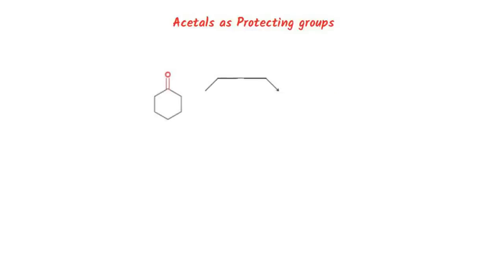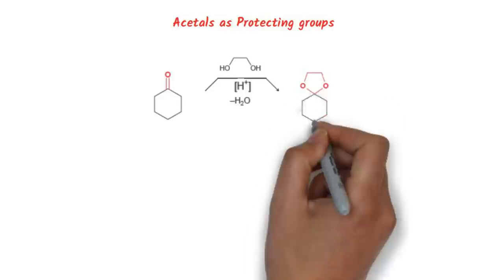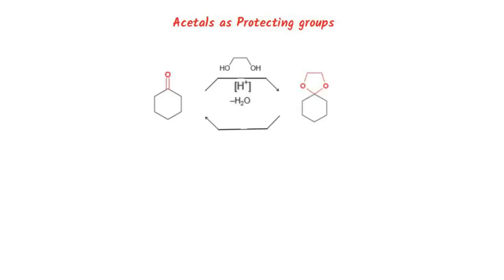Acetals, like ethers, are therefore called the most boring functional group. Acetals pretty much undergo only one reaction. When treated with aqueous acid, they can be hydrolyzed back to the starting aldehyde or ketone. The ability to convert a reactive functional group such as aldehydes and ketones to a boring functional group such as an ether or acetal and back again can be used for protection of these functional groups.